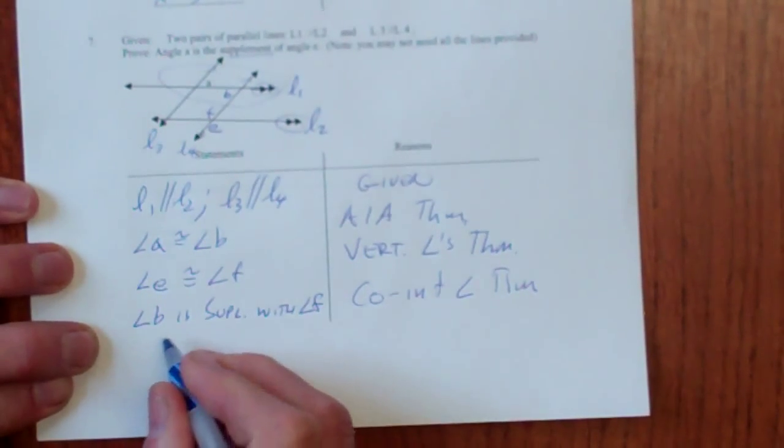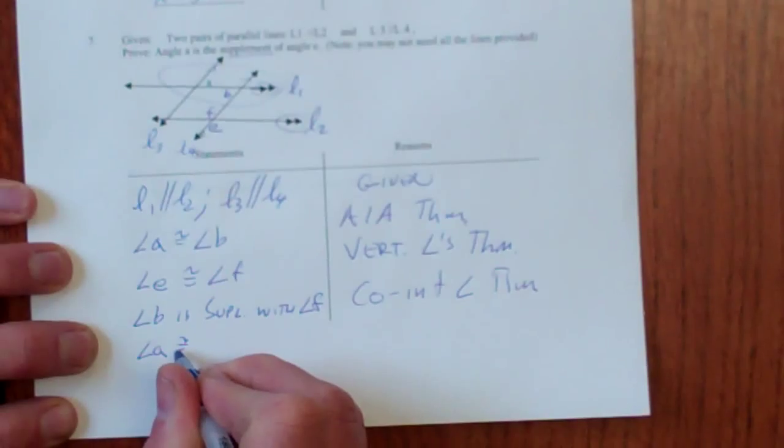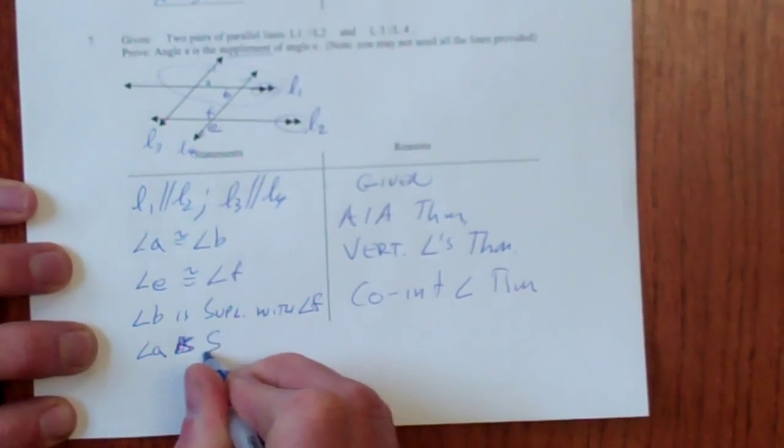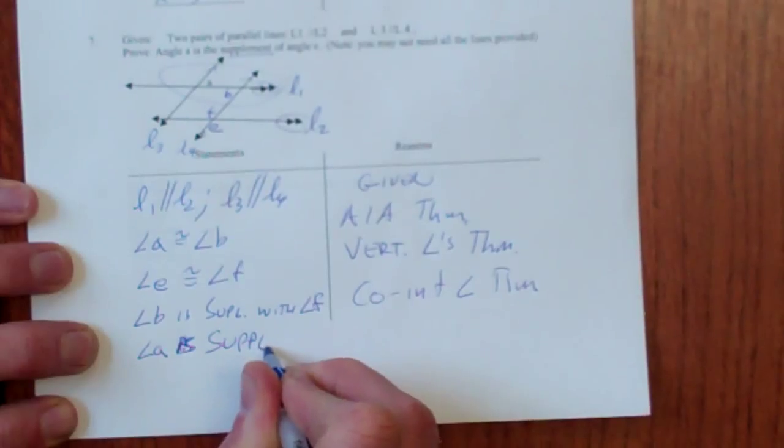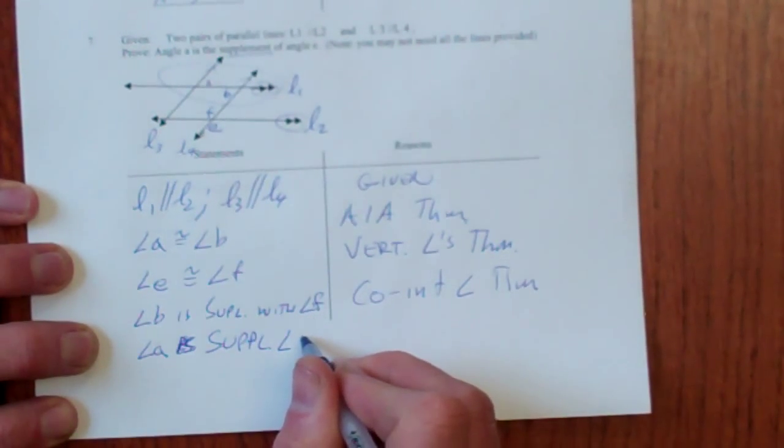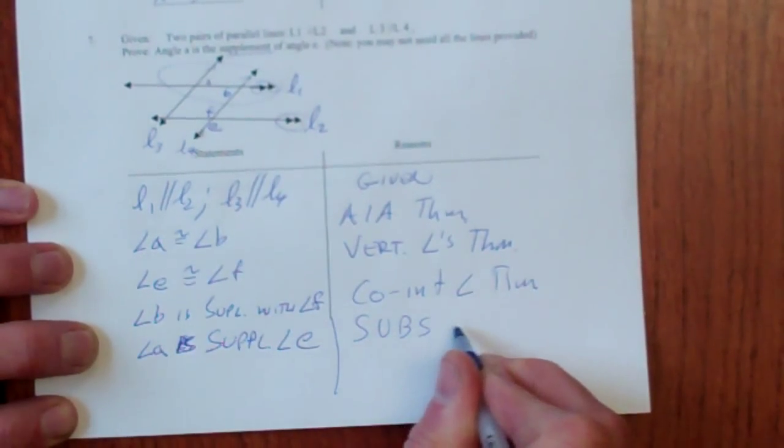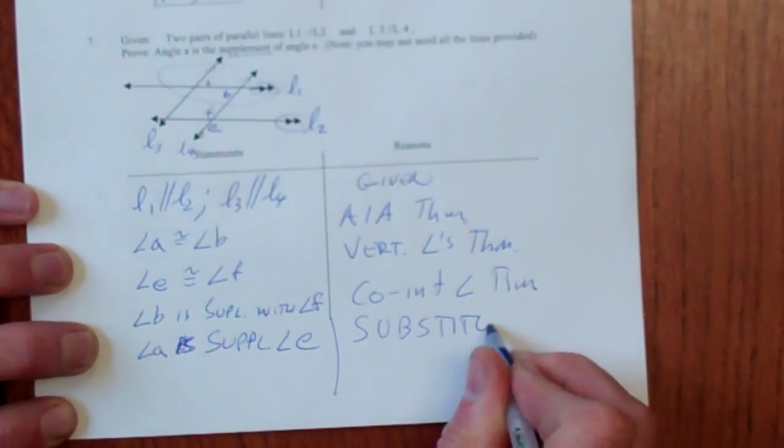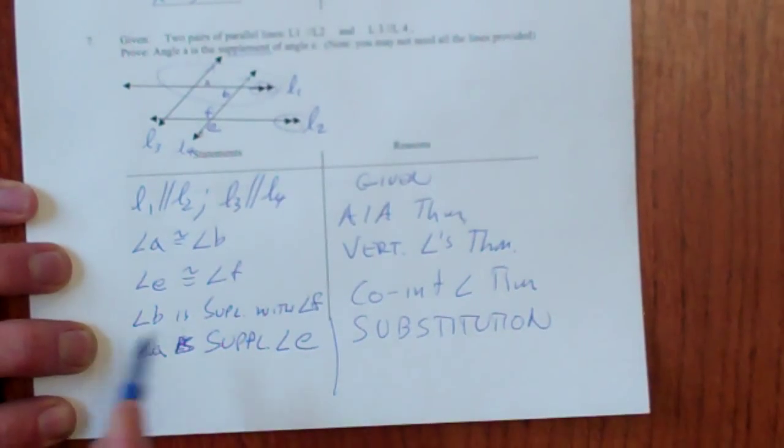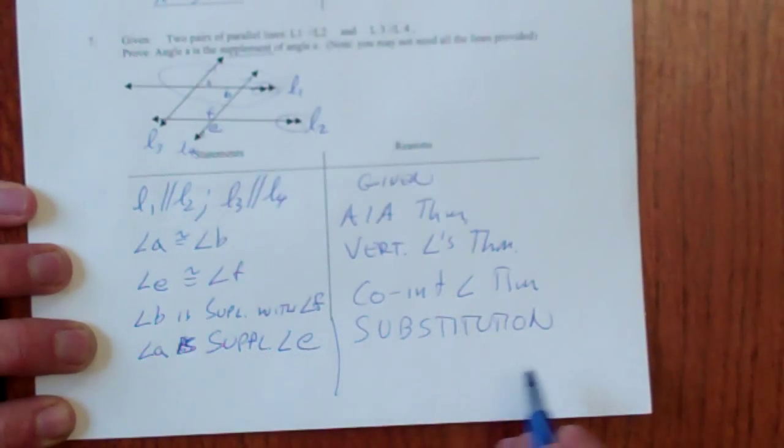Then if I've got F is equal to E, I can say angle B is supplementary with angle F. And that's co-interior angle theorem. And then I can say that angle A is congruent, oh sorry, is supplementary. That's what we're trying to prove. Supplementary to angle E. And that's just a substitution. I'm substituting F in for E and then B in for A. So B gets replaced with A and F gets replaced with E. And I'm done.